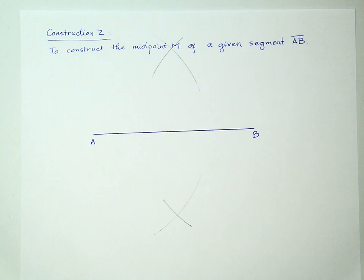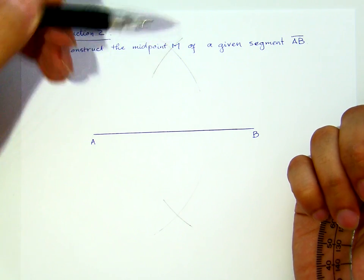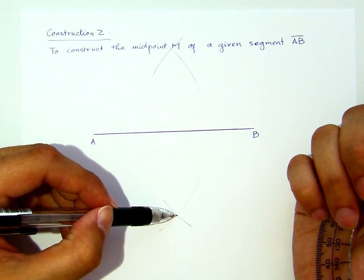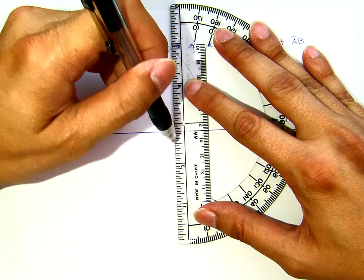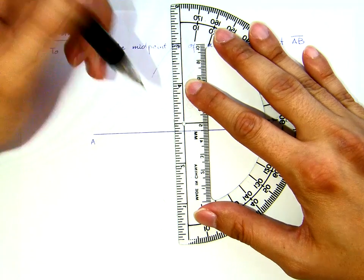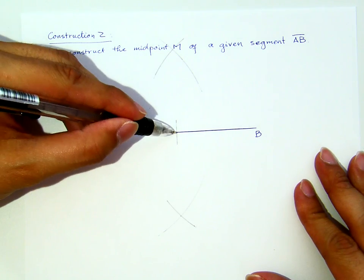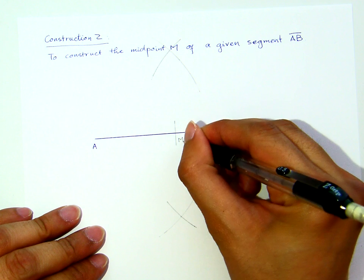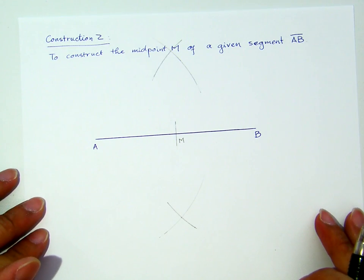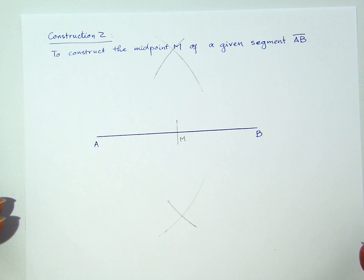Then, what I will do next is I will connect the intersection of the arcs here with the intersection of the arcs here. When I connect these two points intersecting with AB, that's how I will locate my point M. This point here is the point M, which is the midpoint of AB.